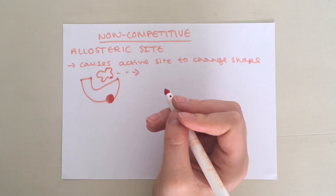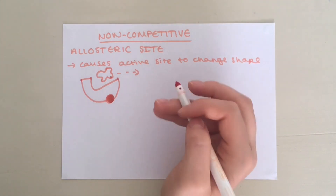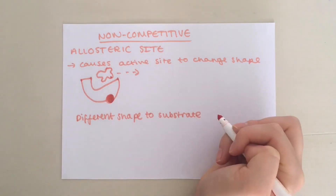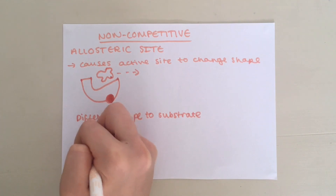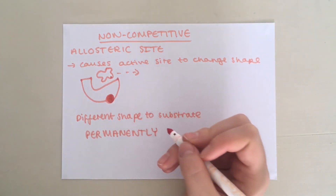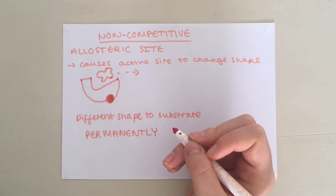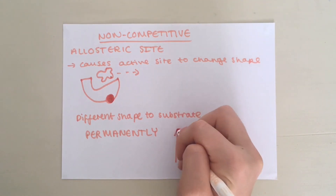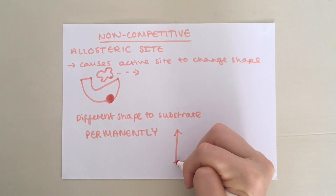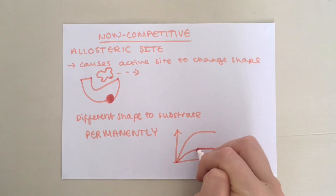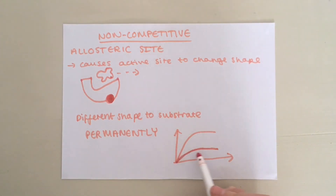Unlike competitive inhibitors, non-competitive inhibitors usually have a different shape to the substrate. Also, they bind permanently. This means that even if you increase substrate concentration, the rate of reaction will not change as enzyme activity will still be inhibited. This graph shows the rate of reaction with no inhibitor versus with a non-competitive inhibitor — even when you increase substrate concentration, the rate stays flat.